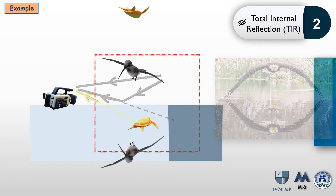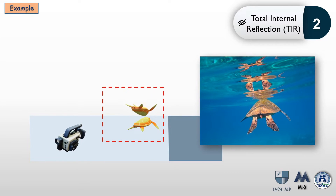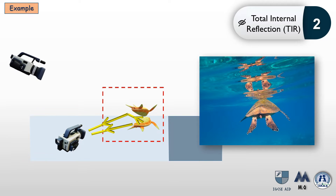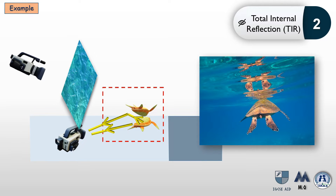If we place the camera inside the water focusing on the turtle, it can see the turtle directly. It can also observe the image of the turtle on the surface of the water, as another light ray is totally internally reflected back towards the camera. If a camera is placed on top, it cannot see the turtle at all, as all of the light from the turtle was totally internally reflected into the water.